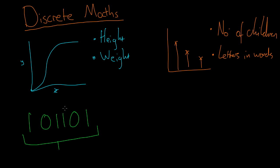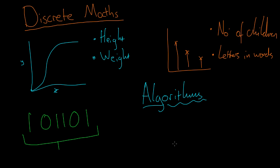So this idea of working with computers in discrete mathematics is particularly useful because of the idea of a process. A computer can't just spontaneously do things — it needs to have a set of instructions to follow. And we call these algorithms. A computer isn't capable of that kind of intuitive thought, so you give it an algorithm. You don't need to understand the process; you just follow the instructions.